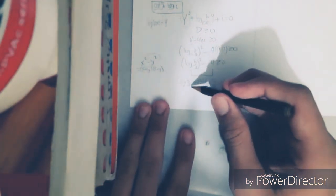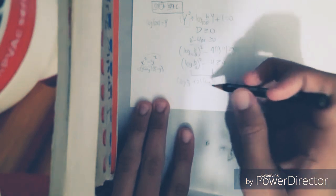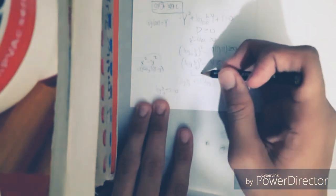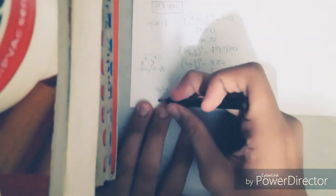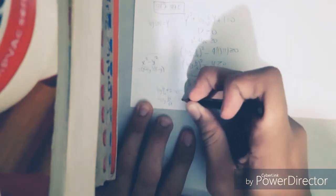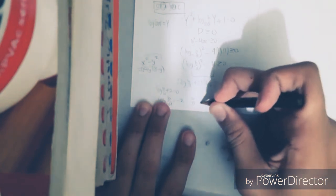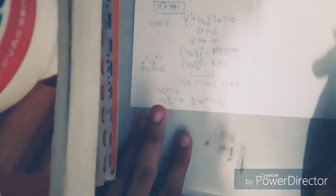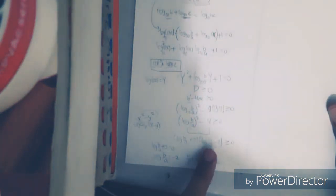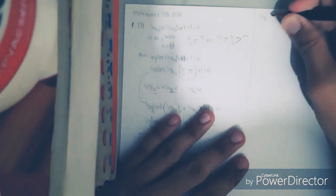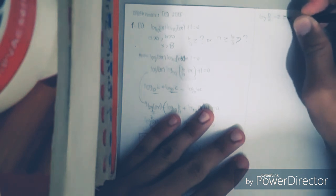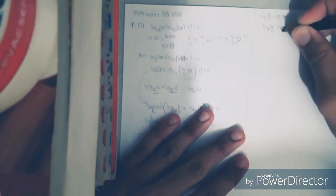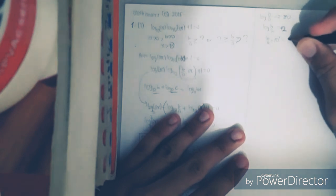Solving each factor: from log(b/a) + 2 = 0, we get log(b/a) = −2, so b/a = 10⁻² = 1/100. From log(b/a) − 2 = 0, we get log(b/a) = 2, so b/a = 10² = 100. These give us two critical values: 1/100 and 100.